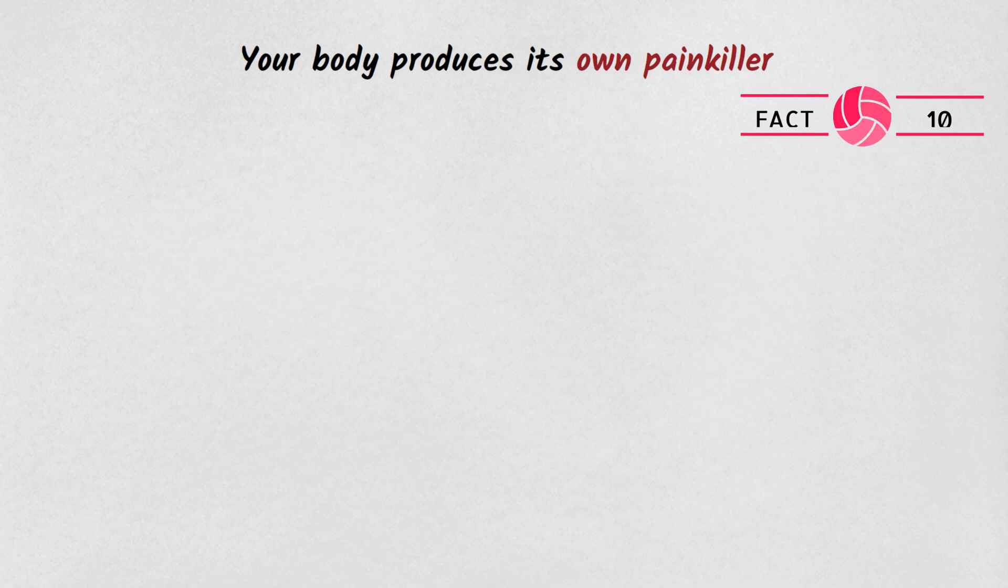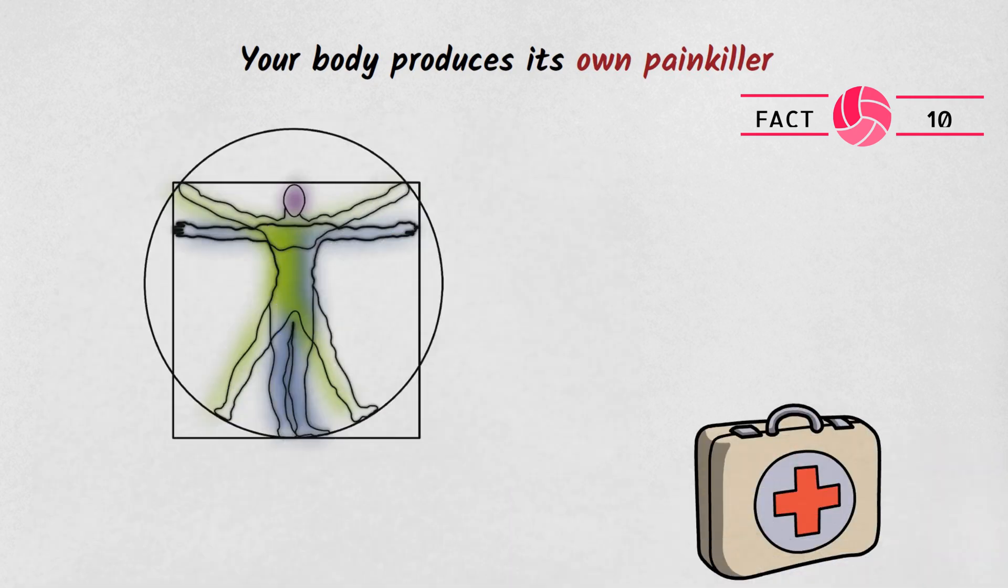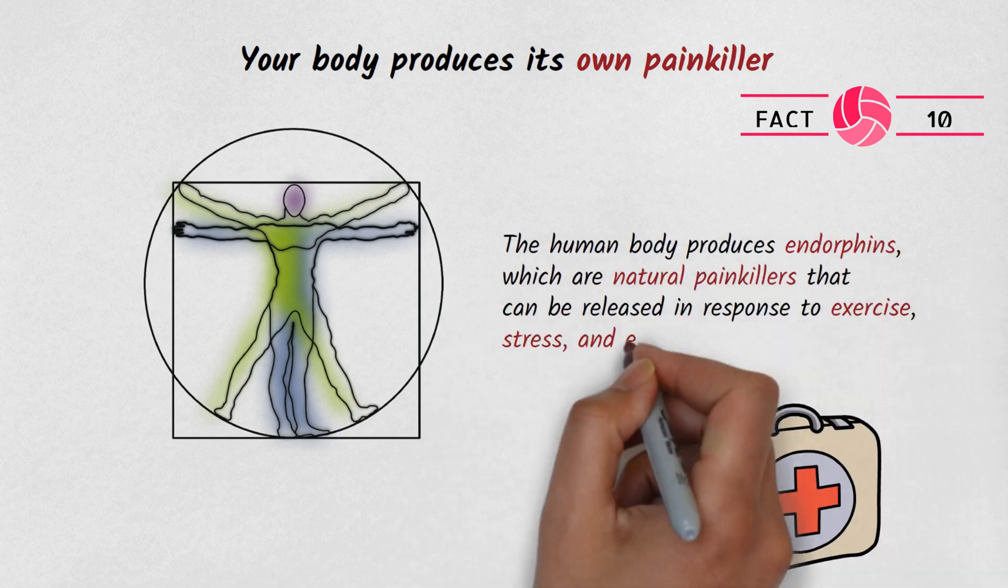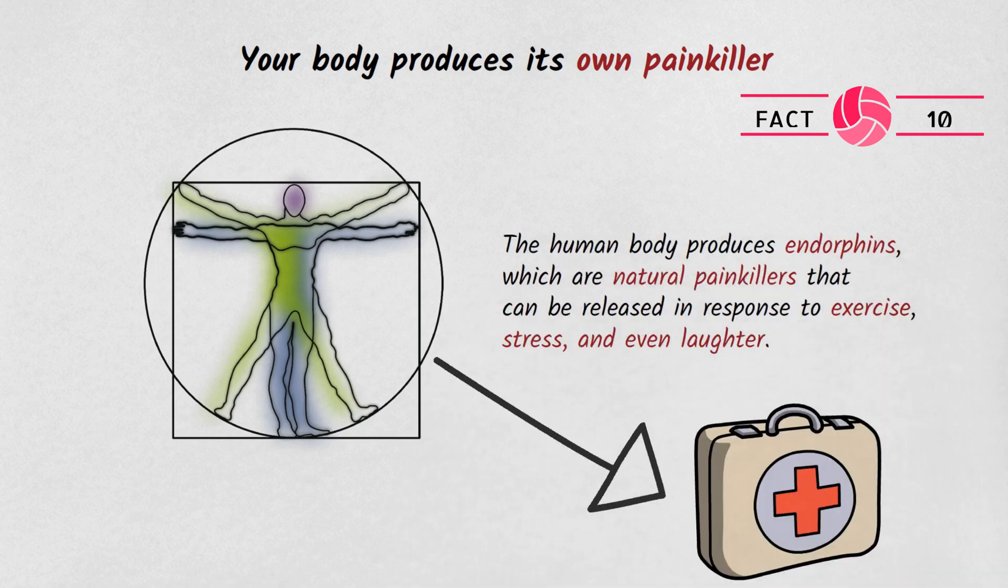Fact number 10. Your body produces its own painkiller. The human body produces endorphins, which are natural painkillers that can be released in response to exercise, stress, and even laughter.